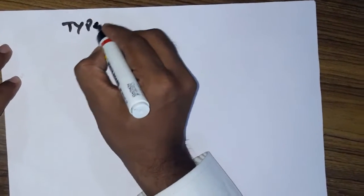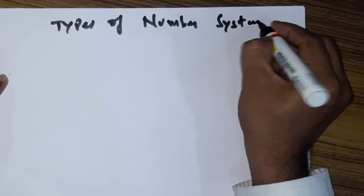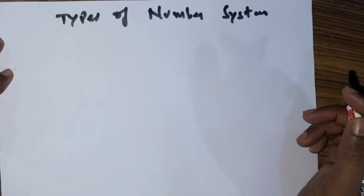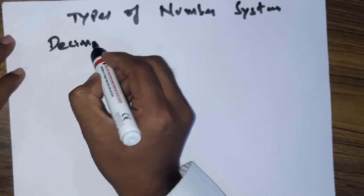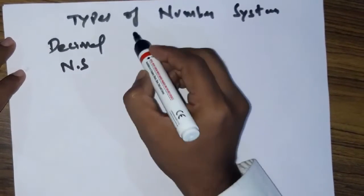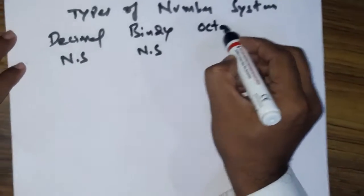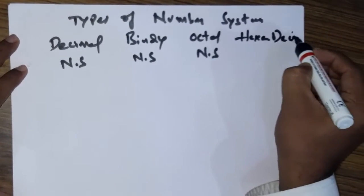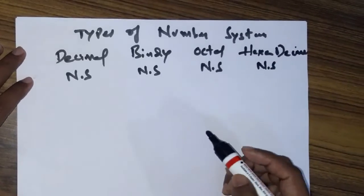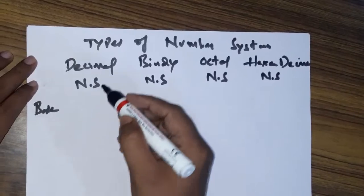Today's topic is types of number systems. In computer science, we commonly use four number systems: the first one is the decimal number system, the second one is the binary number system, the third one is the octal number system, and the fourth one is the hexadecimal number system.